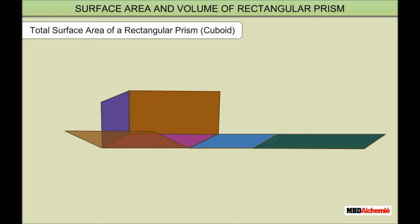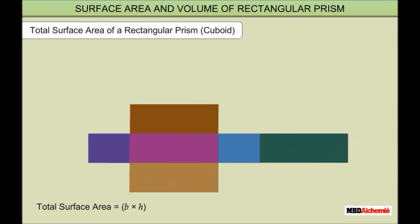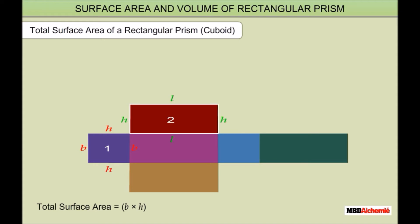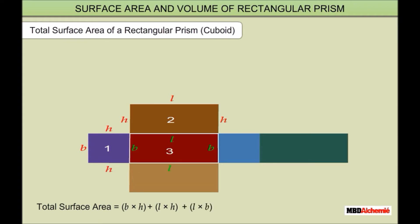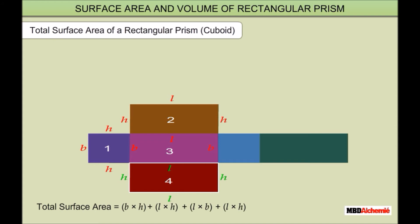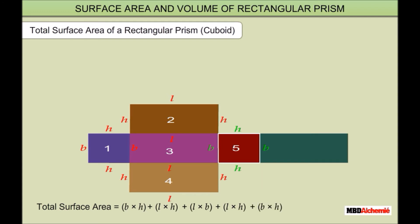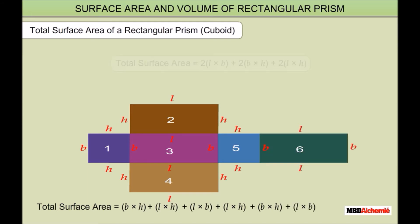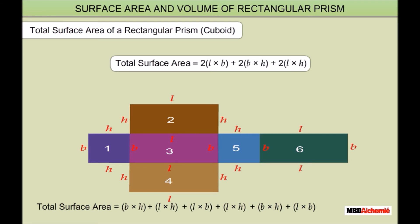The sum of the areas of the six rectangles is: area of rectangle 1 = B×H, area of rectangle 2 = L×H, area of rectangle 3 = L×B, area of rectangle 4 = L×H, area of rectangle 5 = B×H, area of rectangle 6 = L×B. Therefore, the total surface area equals 2(L×B) + 2(B×H) + 2(L×H).